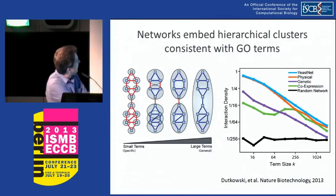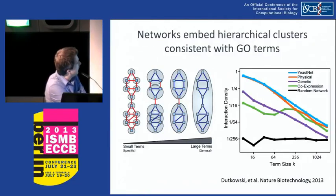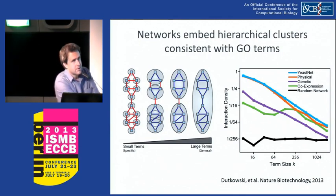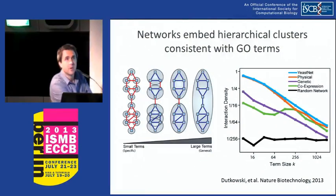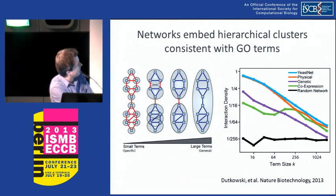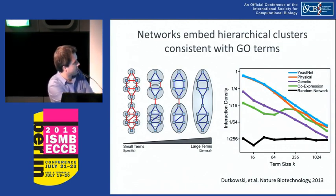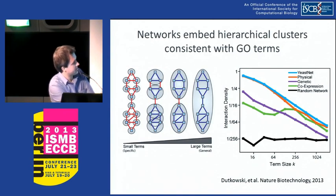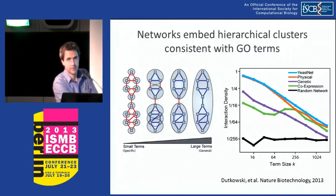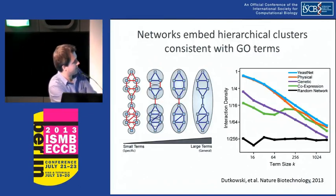We did something very simple: we took Gene Ontology terms from small to very large, mapped the interactions from all different types of networks onto these terms, and computed the fraction of edges inside each component — essentially the density of the components. For any given size of term from small to large, we looked at the average density. What we see is that density decreases as terms get larger — small terms are very dense, and density decreases as we go further. But importantly, for both small and large terms, this density is larger than expected by chance.